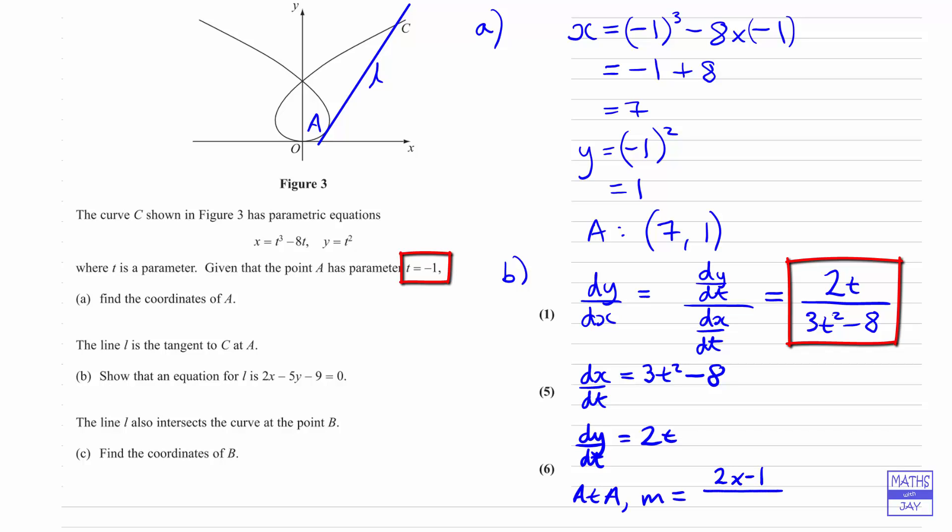So m equals dy by dx with t equals minus 1, which is 2 times negative 1 divided by 3 times negative 1 squared, so that's 3, subtract 8. That's negative 2 divided by negative 5, which equals 2 fifths.